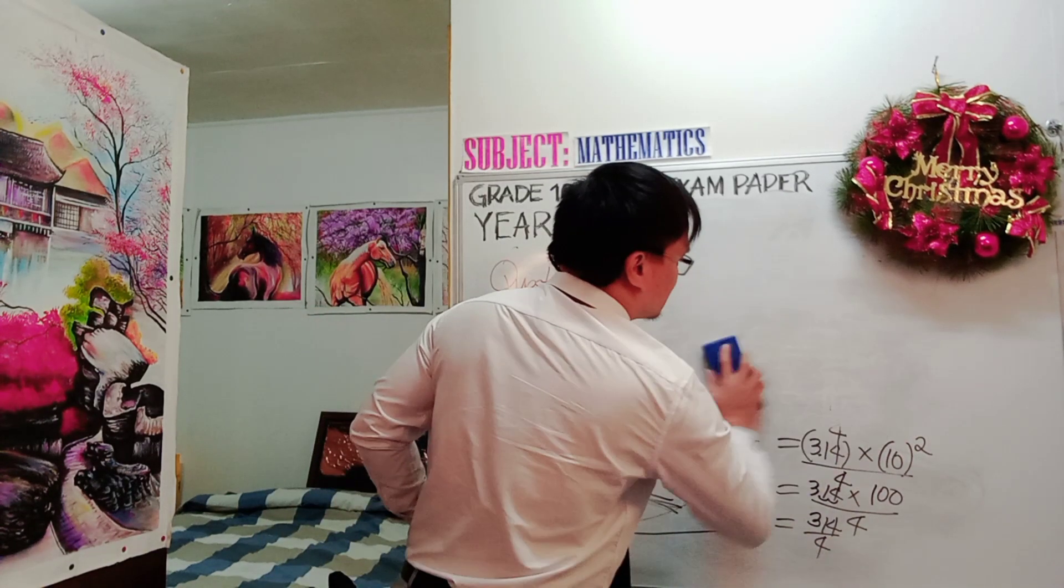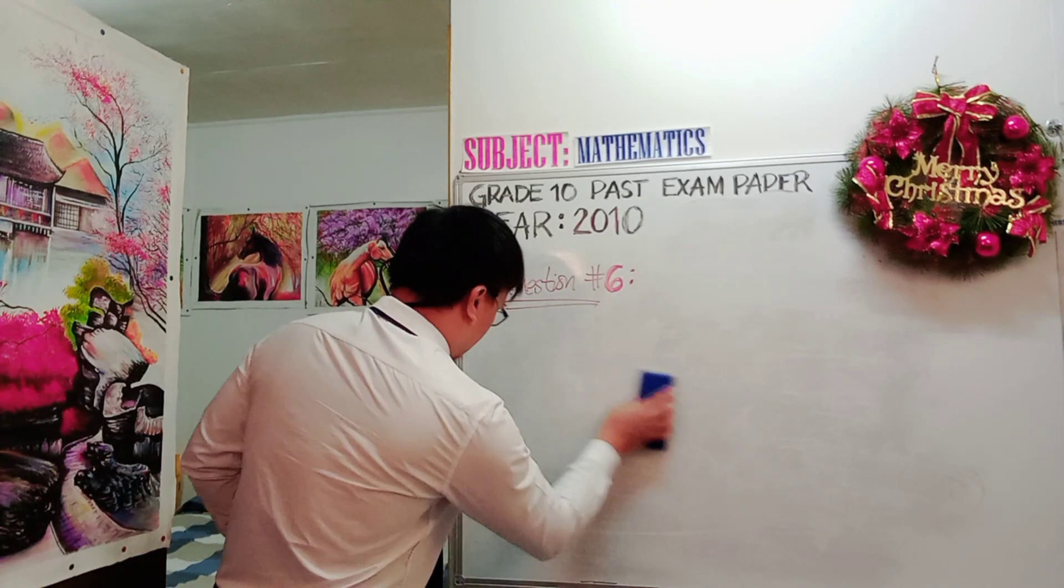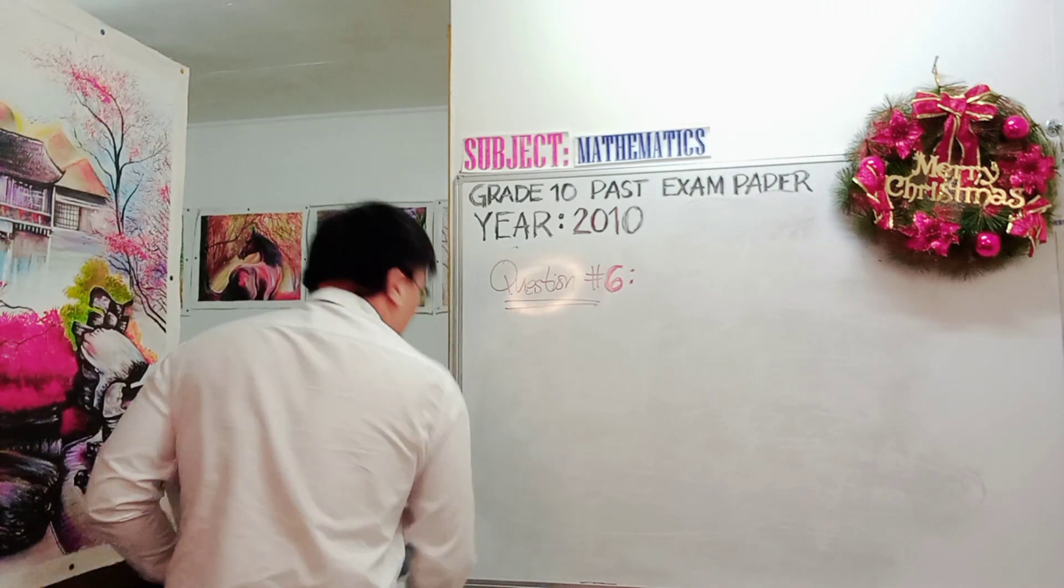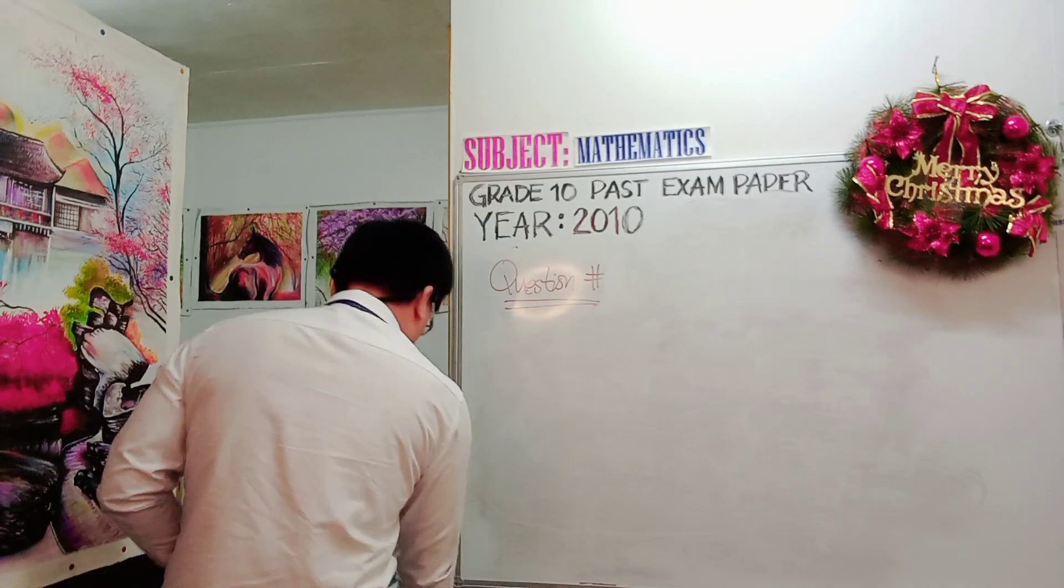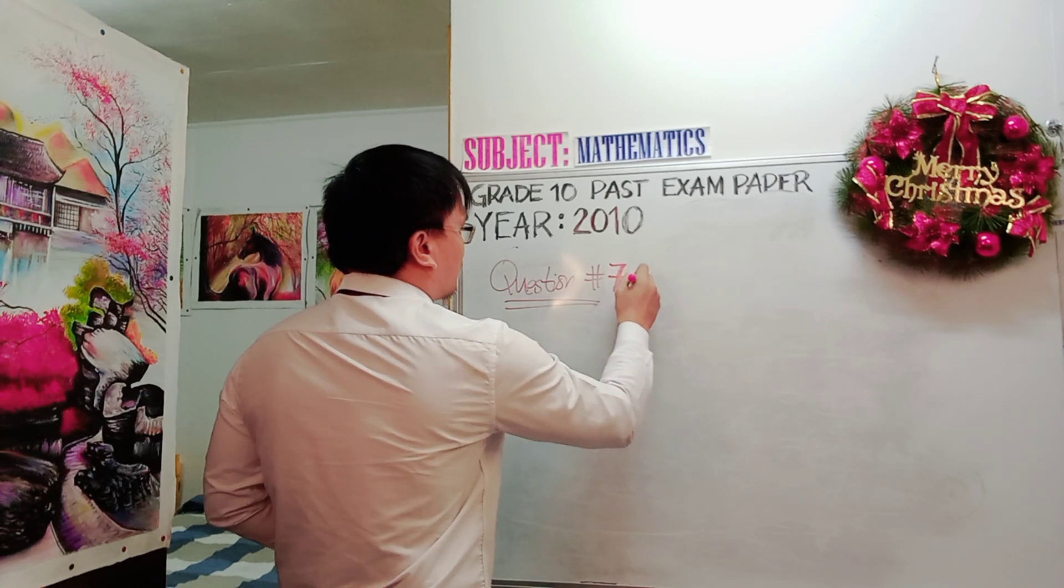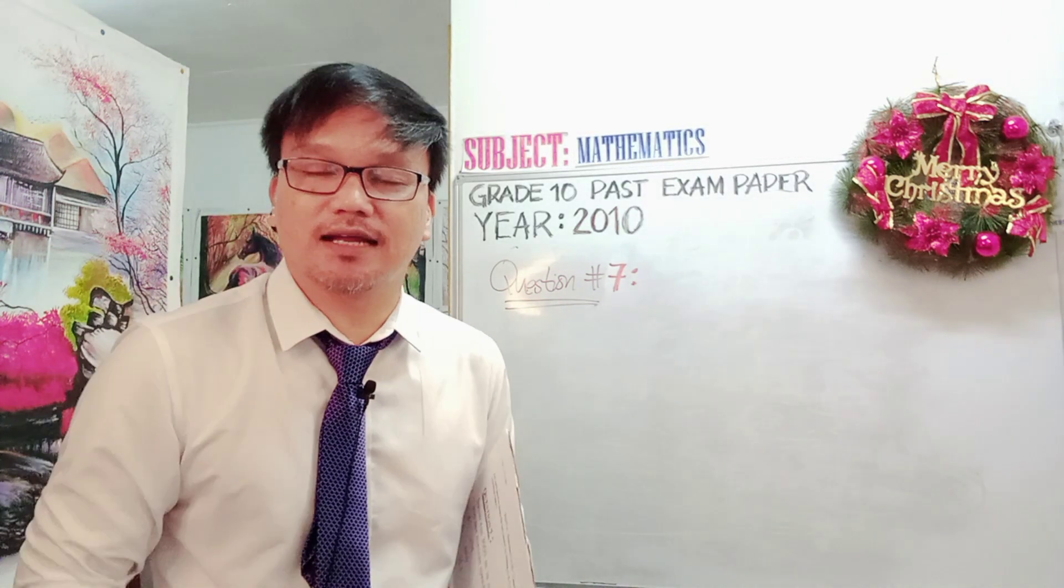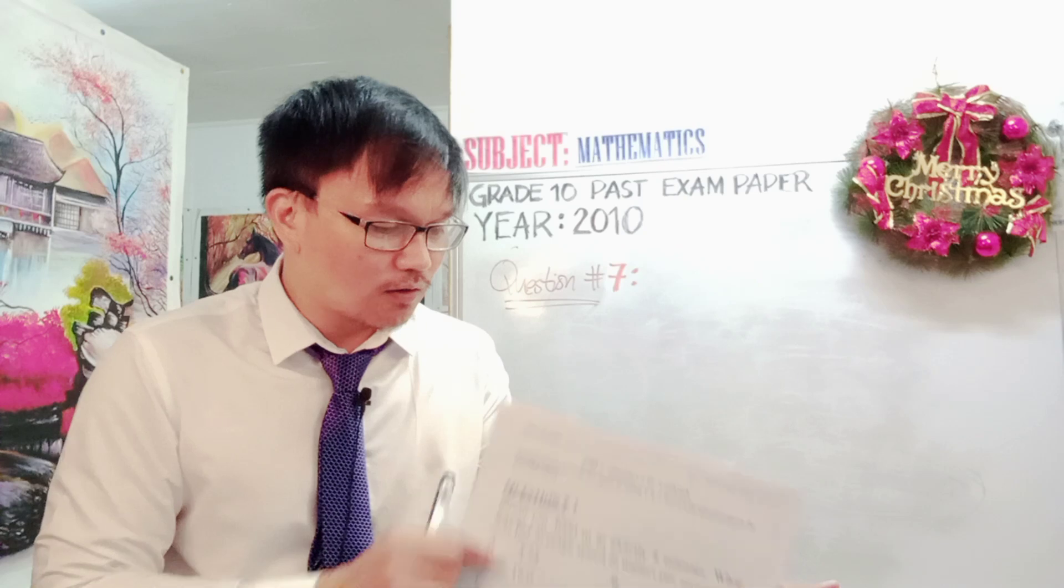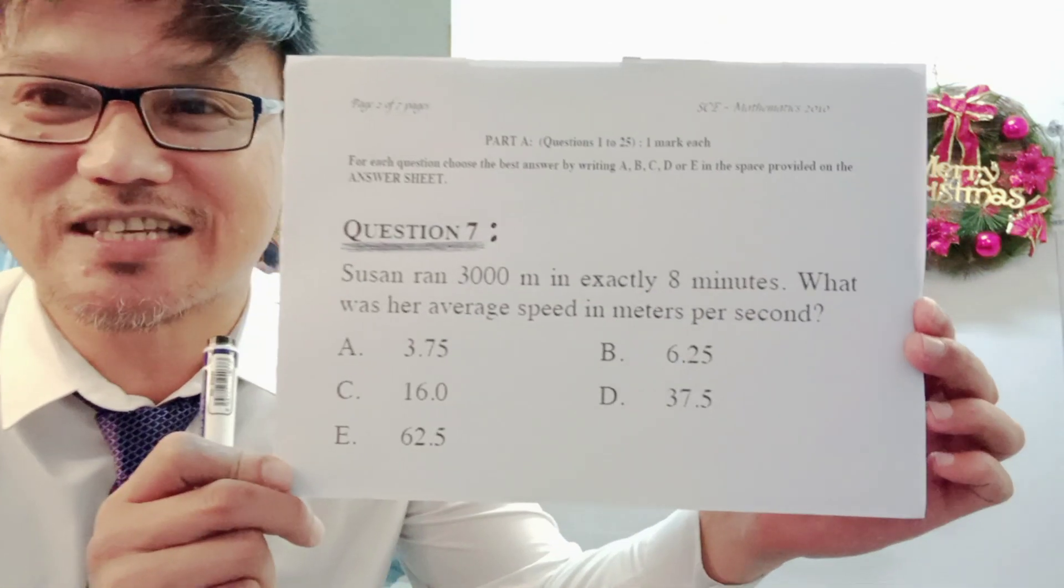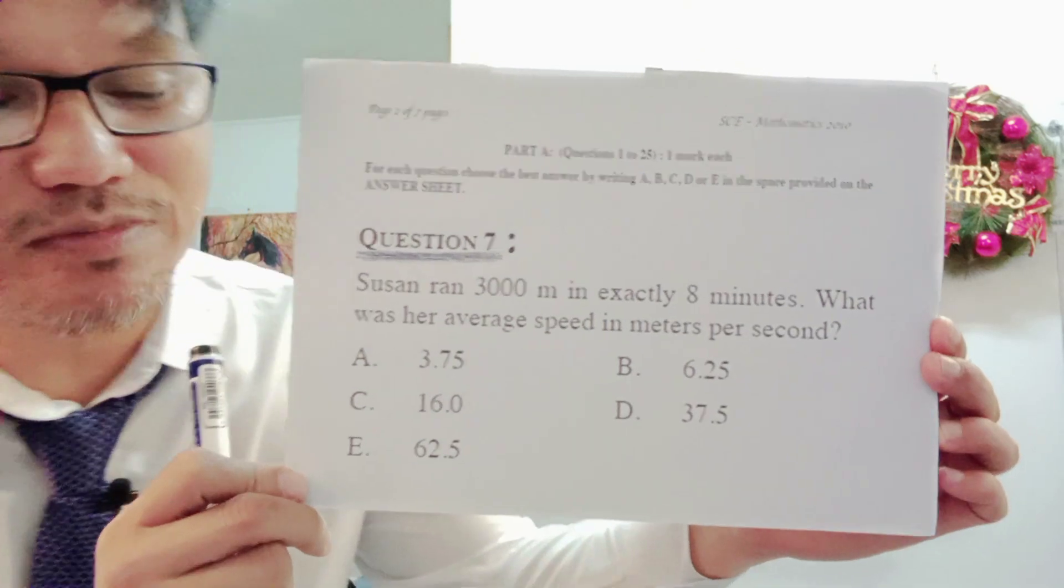Now we are in question number 7. So we have to do it slowly so that you will all understand and be able to follow what we are doing here since this is your revision for your national examination in October. So I hope that you will be patient and bear with me in this revision. This is our question number 7.